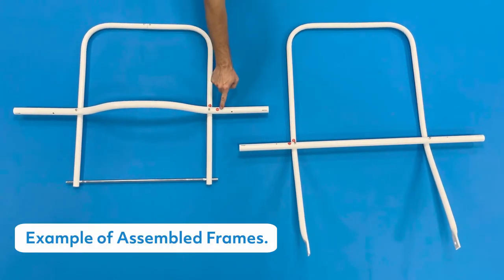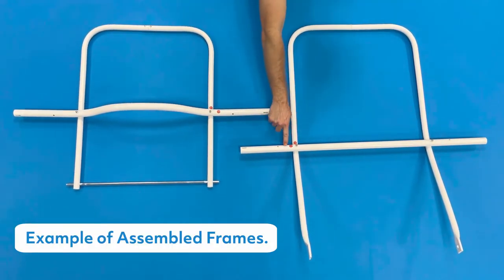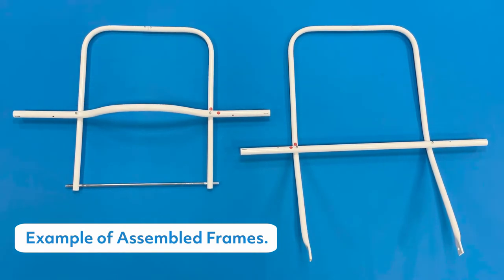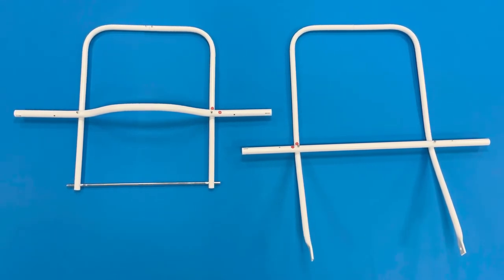It is important to note that the assembly for the back frame and seat frame and their associated crossbars have red dots that must be aligned on the same side.